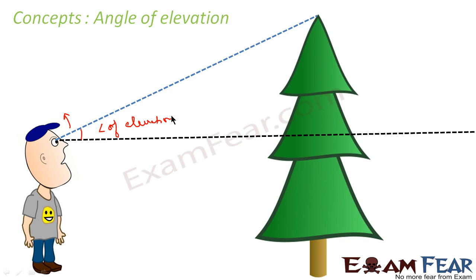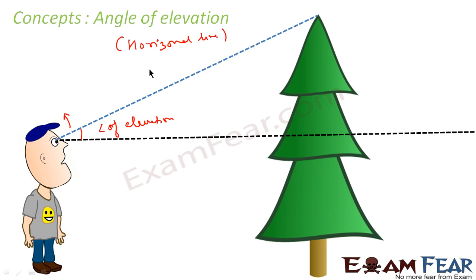The angle of elevation is the angle between the line of sight and the horizontal line. To form an angle, you need two lines: one line is the line of sight, and the other line is the horizontal line.